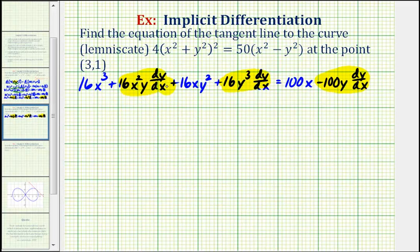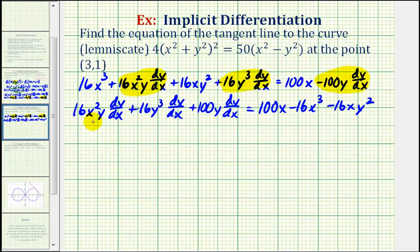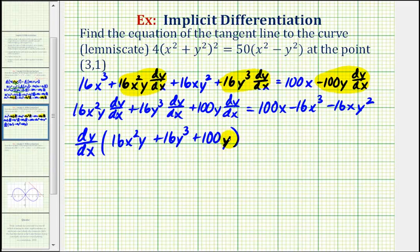To have all the dy/dx terms on the left, we add 100y dy/dx to both sides. Then we subtract 16x cubed on both sides and subtract 16xy squared on both sides. This gives us 16x squared y dy/dx plus 16y cubed dy/dx plus 100y dy/dx equals 100x minus 16x cubed minus 16xy squared.